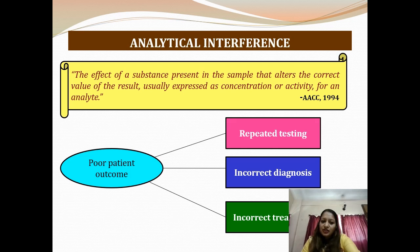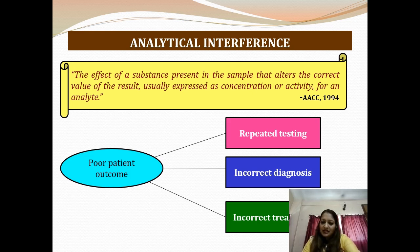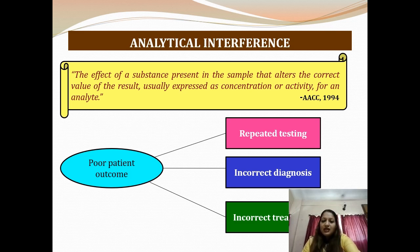Analytical interference is classically defined as the effect of a substance present in the sample that alters the correct value of the result, and is usually expressed as either concentration or activity for that particular analyte. This definition was given in 1994 by the American Association of Clinical Chemists. The outcome of such interference, in a single word, is poor patient outcome — in terms of repeated testing, incorrect diagnosis, and incorrect treatment.